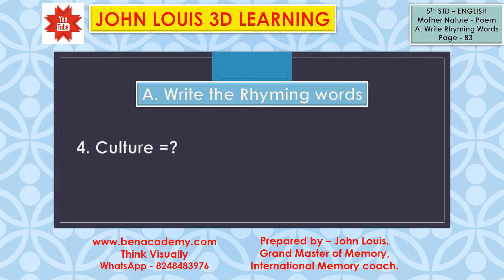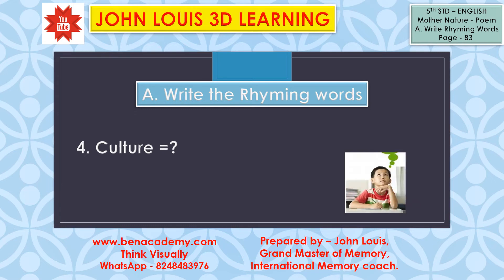The next word is culture. Can you find out what is the rhyming word you learnt in this poem for culture? Try to think and recollect what you learnt. This virtue is our culture. Follow it in your future. Culture, future — there is a rhyming word. What is the rhyming word? Culture, future. So the lines are: this virtue is our culture — follow it in your future.